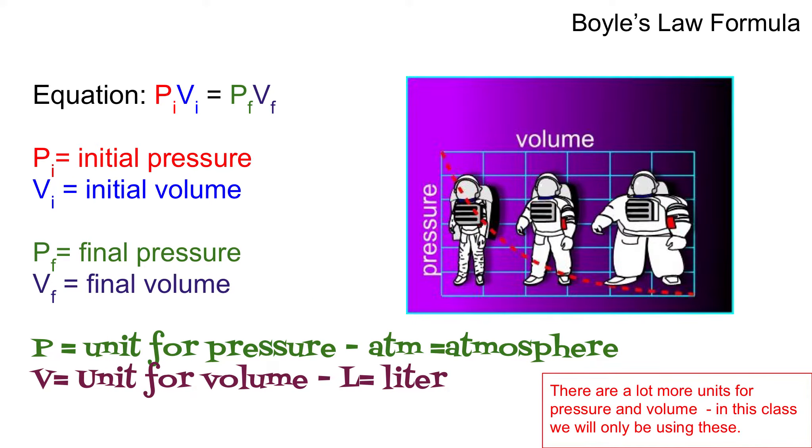Boyle's Law formula. This is something you need to really understand. The equation is P initial times your V initial equals your P final times your V final.